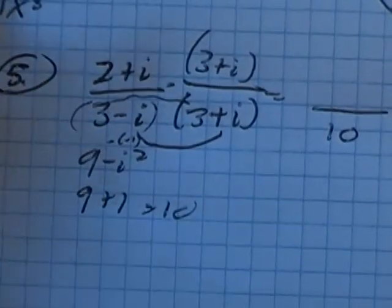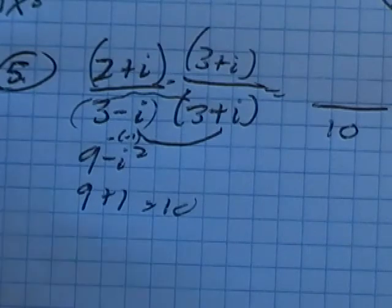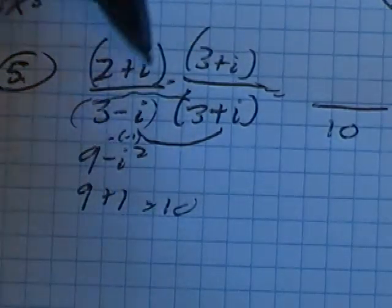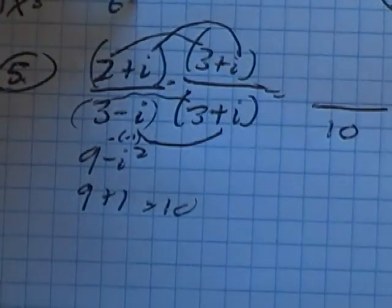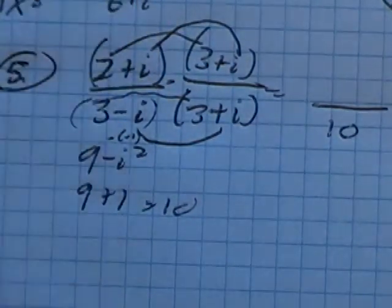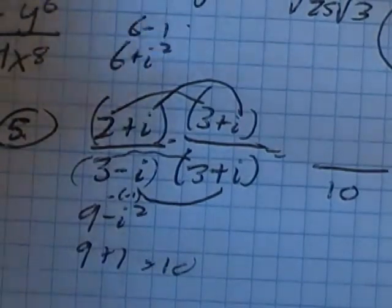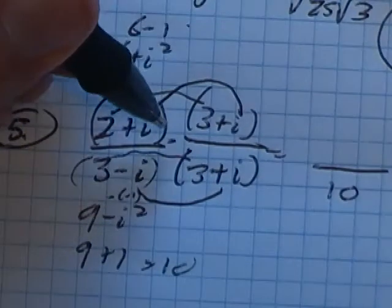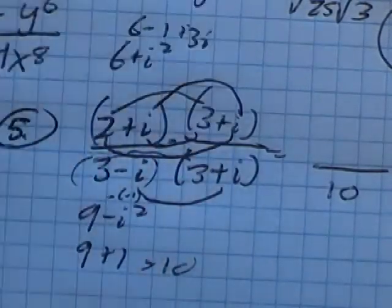Now I've got to multiply out this, and my middle term isn't going to drop out on this one. It only does it with conjugates. Two times three is six. i times i is i squared, that's negative one. So this is the same so far as six minus one.